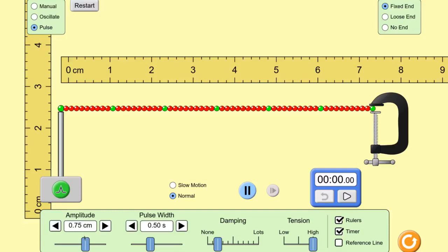Down here we have a few sliders. The first one sets the amplitude of our pulse. We'll leave that at 0.75 centimeters. We'll change the pulse width to the shortest possible one, 0.2 seconds. We'll reduce damping to none. We leave the string tension at high.